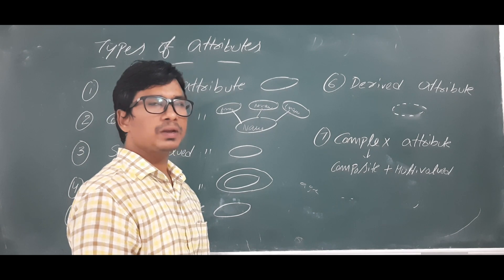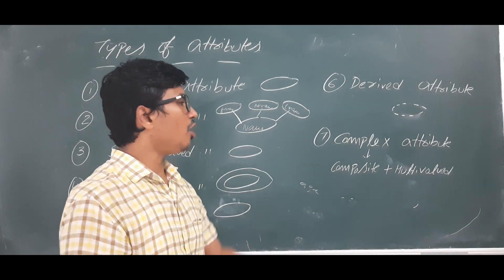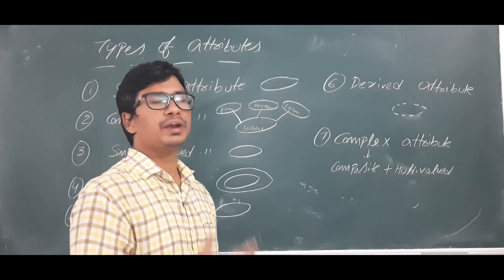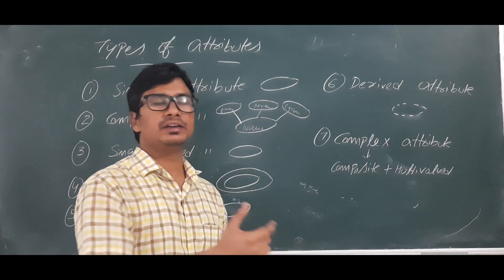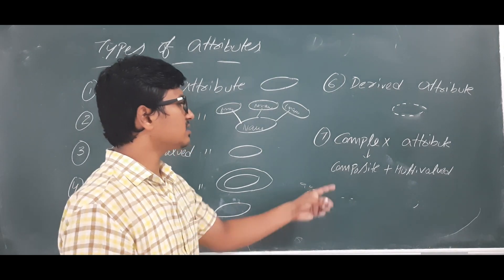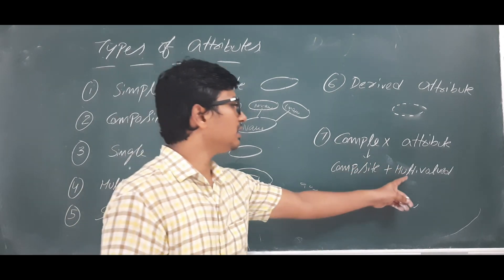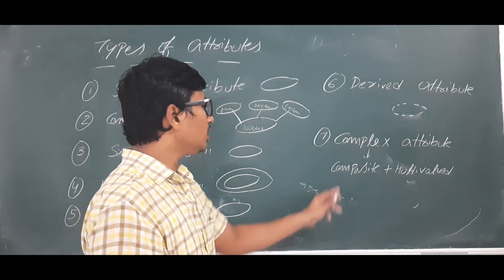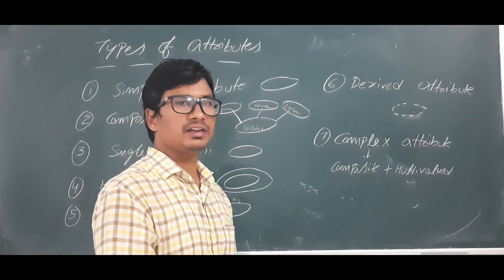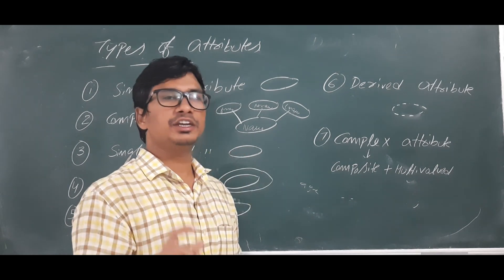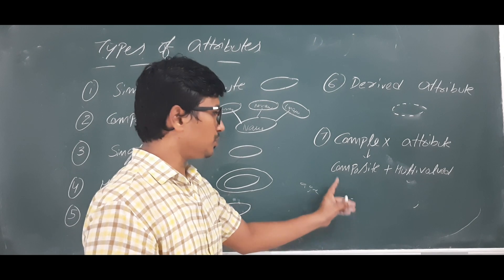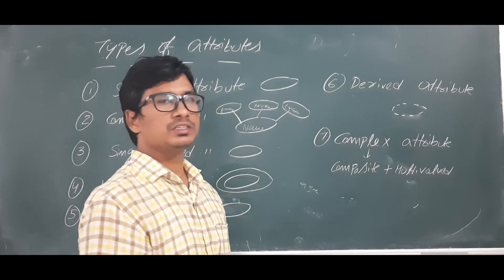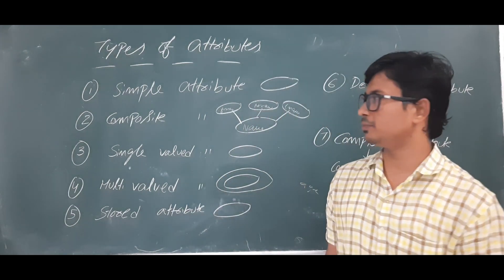A complex attribute is a combination of a composite attribute and a multi-valued attribute. The best example is your address. Your address can have a permanent address and a corresponding address, making it multi-valued. And your address can be further divided into flat number, street number, city, and pin code, making it composite. Since it is both composite and multi-valued, we call it a complex attribute.